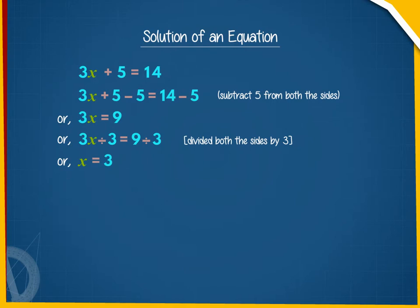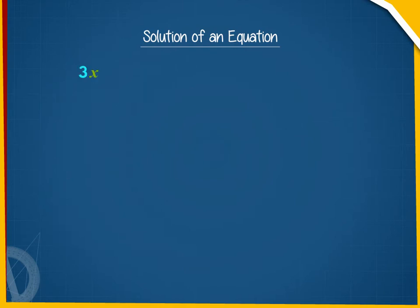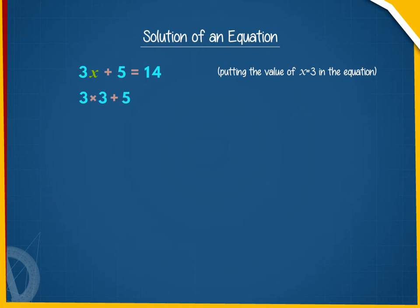Let us place this value of x back in the equation: 3x + 5 = 14. Substituting x = 3: 3 × 3 + 5 = 14, which gives 9 + 5 = 14, and 14 = 14. This means LHS is equal to RHS.